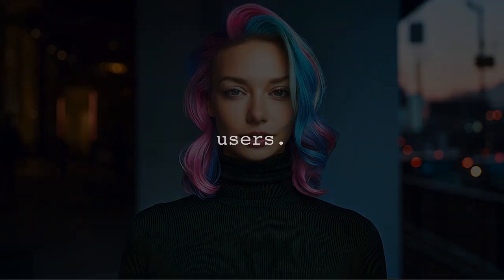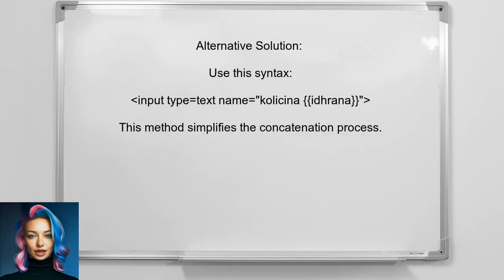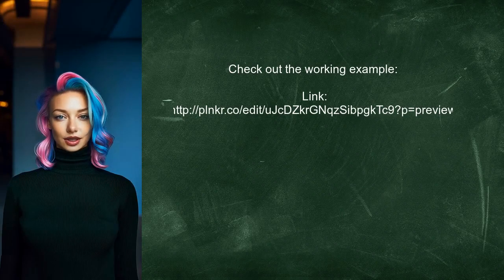Let's look at the answers provided by other users. An alternative solution suggests a simpler way to concatenate strings in your HTML attribute. Instead of using the plus sign, you can directly include the variable within the quotes — using the syntax: name equals 'coletina' space, and then the variable 'idrana' inside the quotes. The user also shared a link to a working example on Plunker for better understanding, which can help you visualize how the solution works in practice.